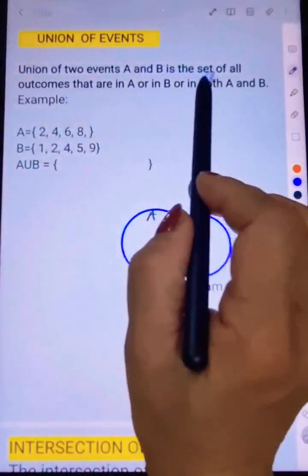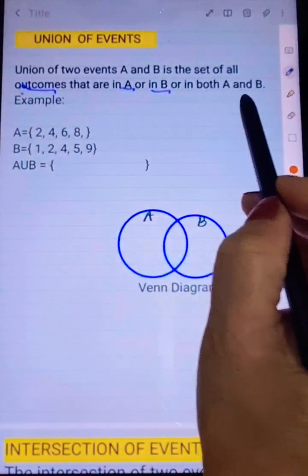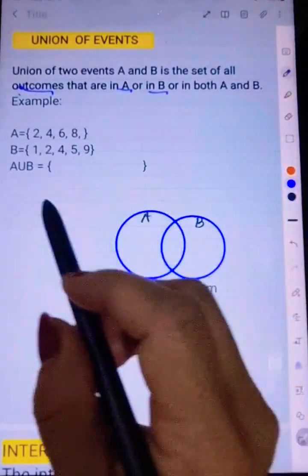The union of two events A and B is the set of all outcomes that are in A, or in B, or in both A and B. So very simple, we're just simply combining all the outcomes of A and B.